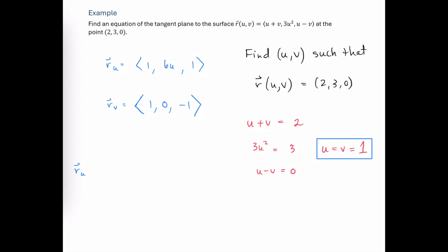We plug in the domain element (1, 1) into the first partial with respect to u to get the vector ⟨1, 6, 1⟩ — a vector in the tangent plane. Plugging (1, 1) into the first partial with respect to v gives the constant vector ⟨1, 0, −1⟩. Now we're ready to take the cross product of these two vectors to determine a vector perpendicular to the plane.